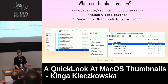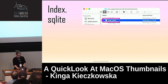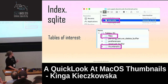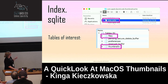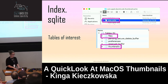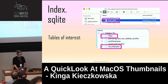Let's take a look at index.sqlite. There are five tables inside that database: files, pending secure delete buffer, preferences, reserved buffer, and thumbnails. We're most interested in the files and thumbnails tables.